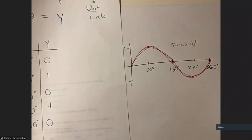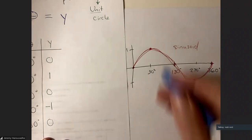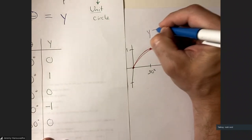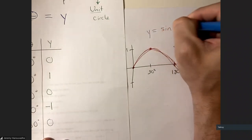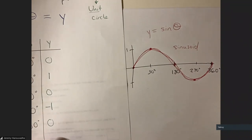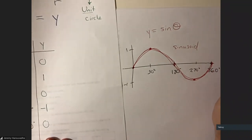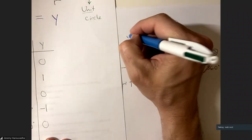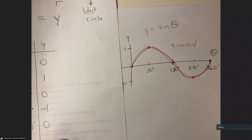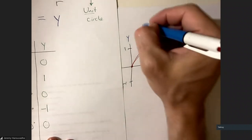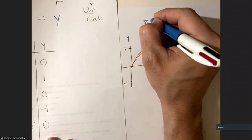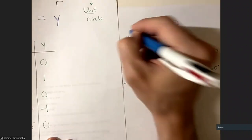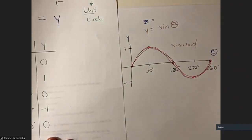That shape is called a sinusoid. This is the graph of the function y equals sine of θ. We have the θ-axis (horizontal) and the y-axis (vertical). In the textbook, this was written as z equals sine of θ, so that axis was called the z-axis.